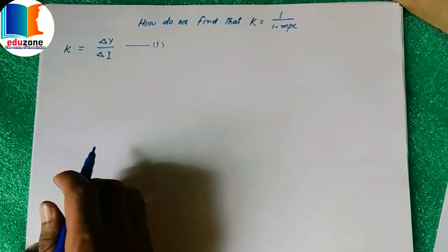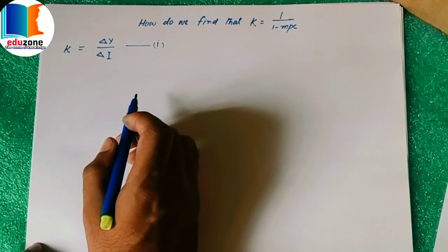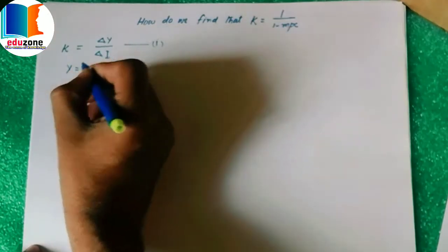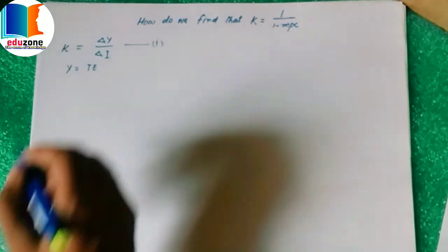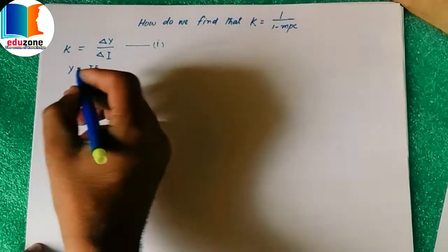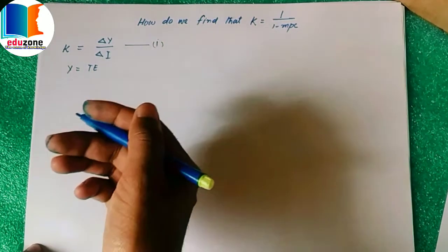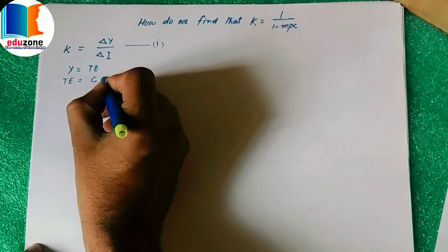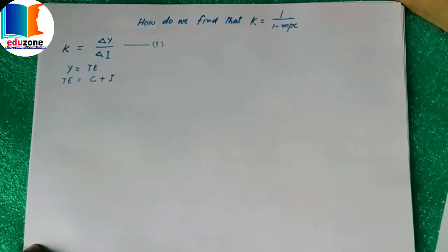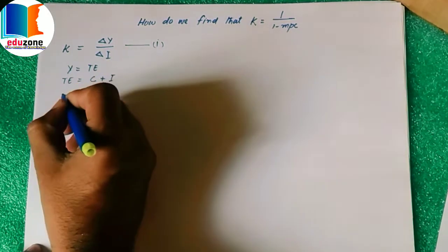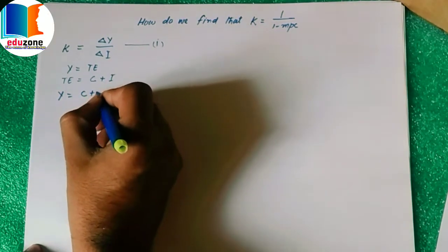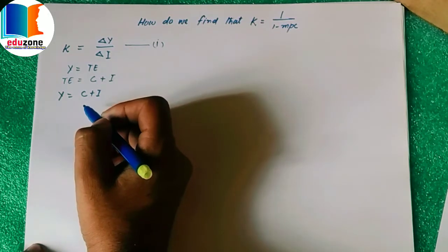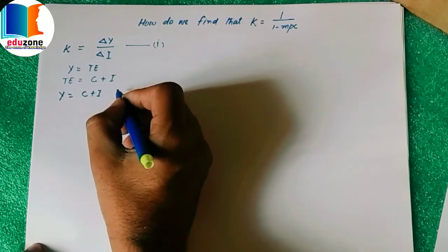We also know that total income equals total expenditure at the level of equilibrium. In a two-sector economy, total expenditure equals total consumption expenditure plus total investment expenditure. So we can write Y = C + I, meaning income equals total consumption expenditure plus total investment expenditure. This represents the state of equilibrium in a two-sector economy.